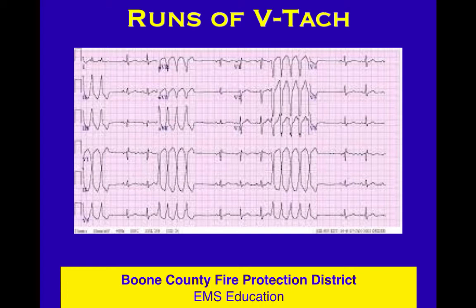A PVC is one premature ectopic ventricular complex. When you put a bunch of them together, they form V-tach. So PVCs want to get together and become V-tach — and V-tach is scary. V-tach can turn into a pulseless rhythm on its own or degrade into V-fib, so V-tach should be a scary thing for you.